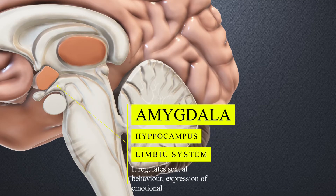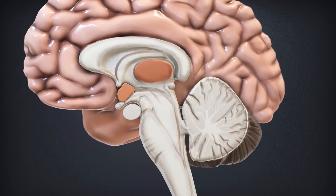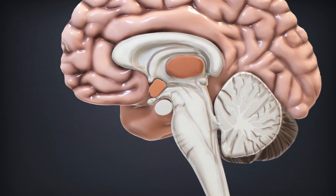The amygdala and hippocampus, present in the inner parts of the cerebral hemisphere, form a structure called the limbic lobe or limbic system. It is involved in the regulation of sexual behaviors, expression of emotional reactions, and motivations.